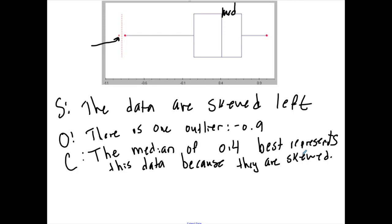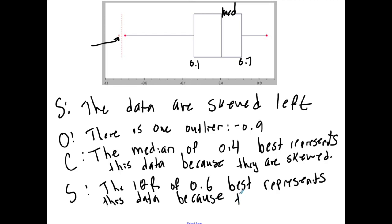Now here I've got 0.5, 0.6, 0.7, and here I've got about 0.1. Okay, so the IQR of 0.6 best represents this data because they are skewed.